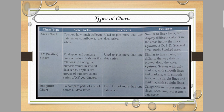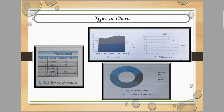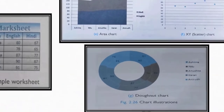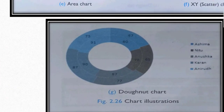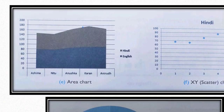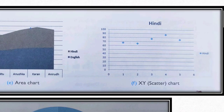Next is the donut chart, used to compare parts of a whole across all data series. It is similar to a pie chart, but instead of a solid circle, each data series creates a ring. You can see the ring shape in the image — this represents the donut chart. The area chart shows two different colors in its areas.